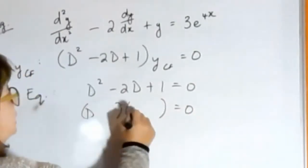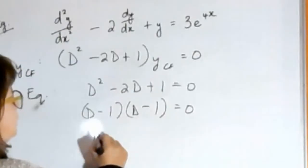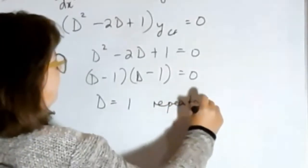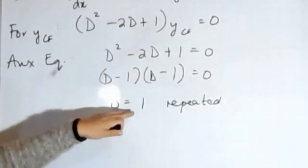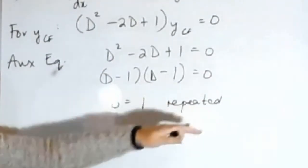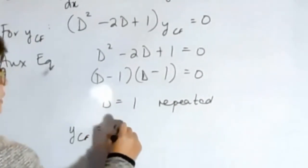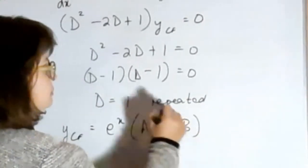So we get one and one minus, so the root of this auxiliary equation is going to be D equals one which is repeated, which means the complementary function is going to be e to the x times (ax plus b).